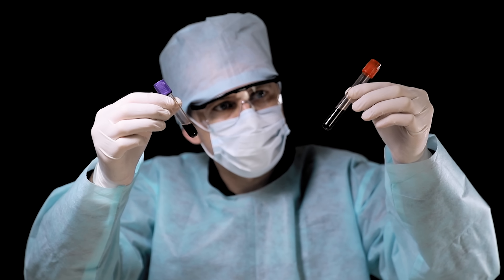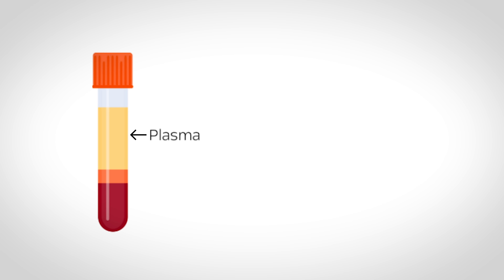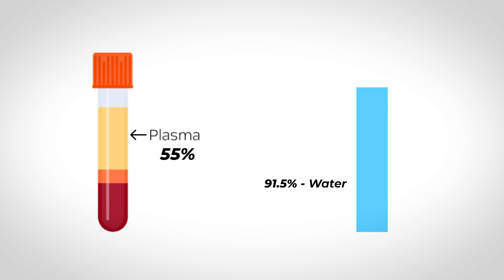Now let's talk about how your body makes blood. Blood consists of two main components: the fluid component or blood plasma, and the formed elements or the cells. Plasma is a straw-colored liquid that makes up about 55% of the total blood volume. Of that 55%, 91.5% is made up of water, 7% is made up of proteins, and 1.5% is made up of solutes.